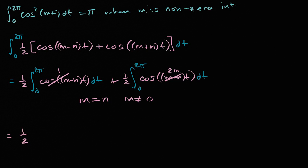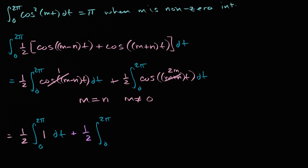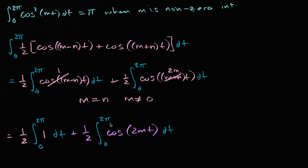This is going to be equal to one-half times the definite integral from zero to two pi of one dt, plus one-half times the integral from zero to two pi of cosine of 2mt dt. Since we're assuming m is not equal to zero, this second term is the definite integral from zero to two pi of cosine times some non-zero coefficient times t, and we've established multiple times that this is going to be zero.